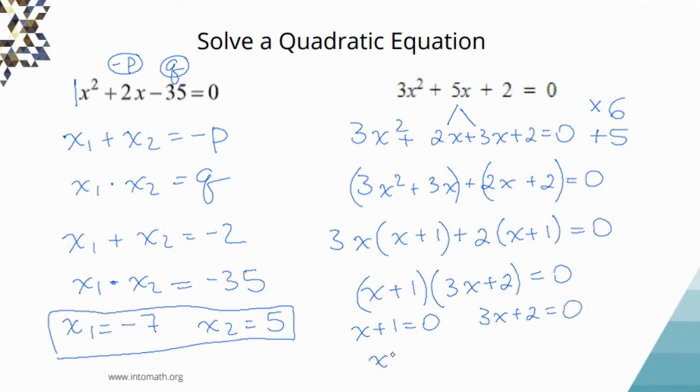Therefore, x = -1. That's my x₁. And then here, x = -2/3. This is my x₂. This just involves simple rearranging: -2 on the other side divided by 3.